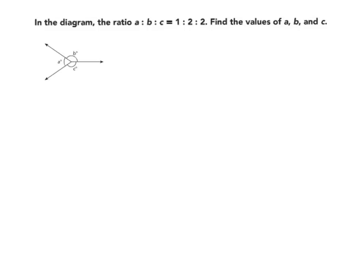In the diagram, the ratio A to B to C equals 1 to 2 to 2. Find the values of A, B, and C.